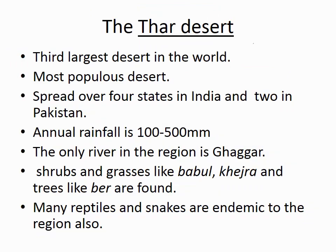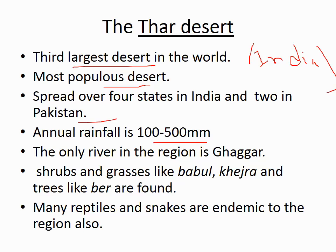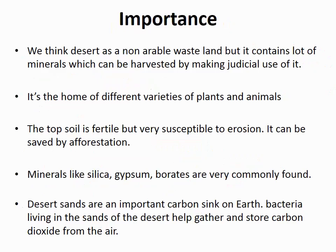The Thar Desert is significant because India has this third desert. It is found in the western part of India, in Rajasthan and Gujarat, and is the third largest desert in the world. It is the most populous desert, with large populations living inside and outside it. It spreads over four states in India and into Pakistan. Annual rainfall ranges between 100 to 500 millimeters. The Ghaggar River flows through it, and vegetation includes shrubs, grasses, babul, and khejri trees. Many reptiles and snakes are endemic to the Thar Desert.